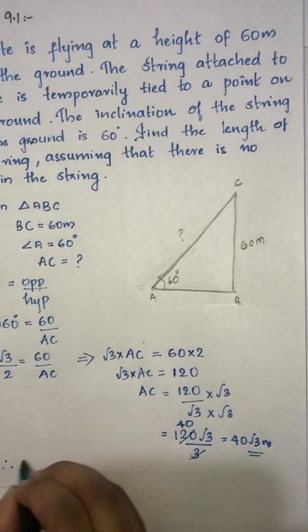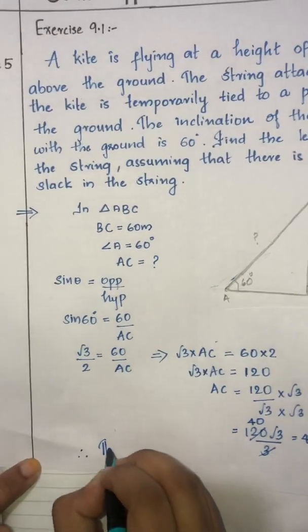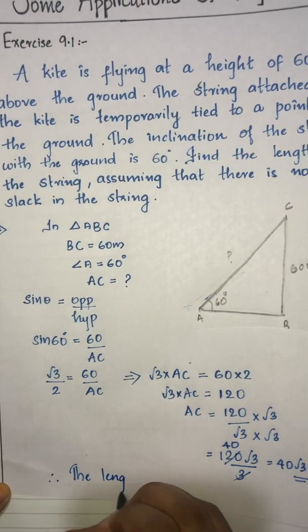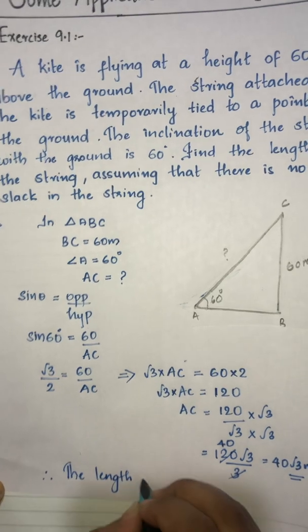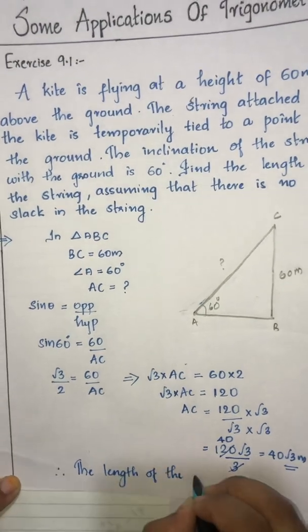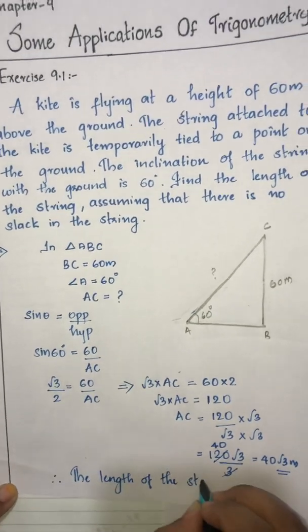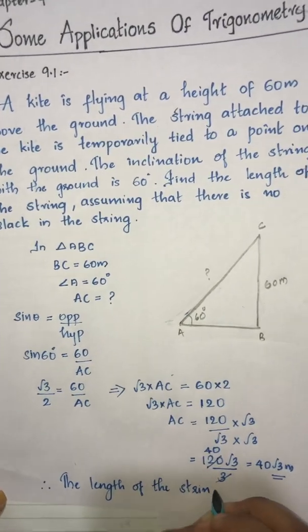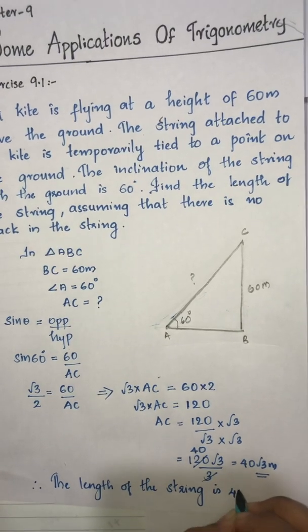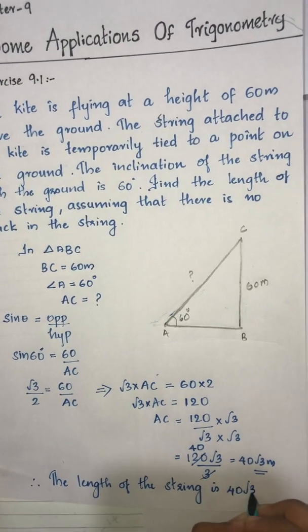Therefore, the length of the string is 40 root 3 meters.